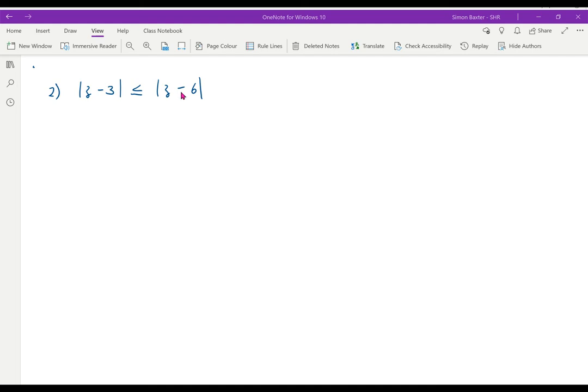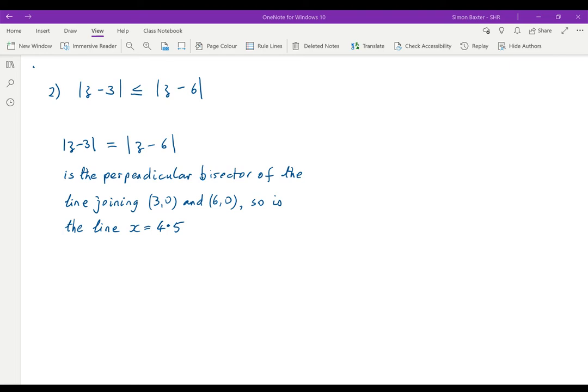As in the first case we want to look at what happens when we have the equals. So we have mod z minus 3 is equal to mod z minus 6 which is the perpendicular bisector of the line joining 3, 0 and 6, 0. Midway between 3 and 6 it must be the line x equals 4.5.